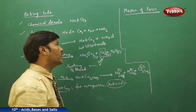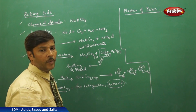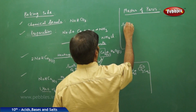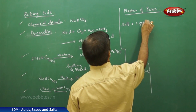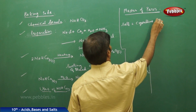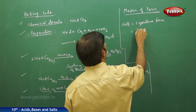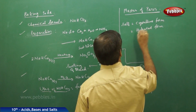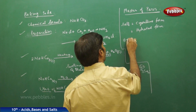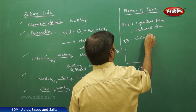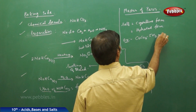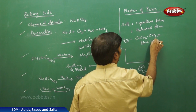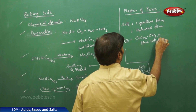The next part of discussion is plaster of Paris. Before that, salts in general are in the crystalline form, and when in crystalline form they are also in the hydrated form. For example, copper sulphate pentahydrate (CuSO₄·5H₂O), also called blue vitriol.